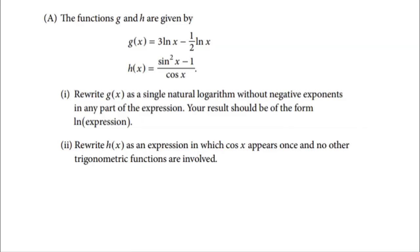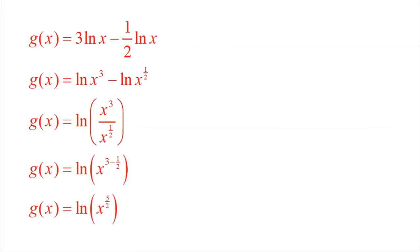For Part A part one, we need to rewrite G of X with only one natural log using basic combining rules. First, I'm going to bring the values out in front up using the power rule — the three moves up as a power and the one half moves up as a power. Then I have the subtraction of two natural logs, which I condense down with division: natural log of X cubed divided by X to the one half. Then using the exponent rule for dividing with the same base, I subtract the exponents: three minus one half equals five halves — six halves minus one half is five halves.